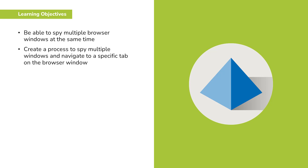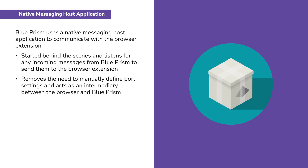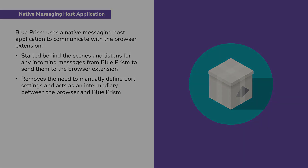Blue Prism uses a native messaging host application to communicate with the browser extension. This application is started behind the scenes when a browser is launched from Blue Prism and then listens for any incoming messages from Blue Prism to send them to the browser extension. Native messaging host removes the need to manually define port settings and acts as an intermediary between the browser and Blue Prism.